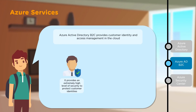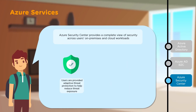Next, we have Azure Active Directory B2C, which helps provide customer identity and access management in the cloud. Protecting customer identity is extremely important for an organization, and that's what Azure AD B2C does. It also enables applications to scale to great amounts, even billions of customers. Then we have the Azure Security Center, which is like a command post giving you a complete view of security across your on-premises and cloud workloads. It provides a threat protection method that adapts to situations, reduces exposure to threats, enables rapid threat response, and makes finding and fixing vulnerabilities much easier.